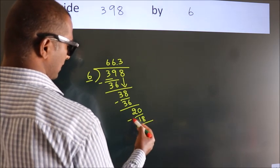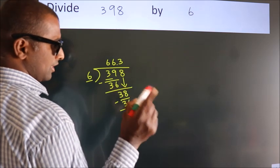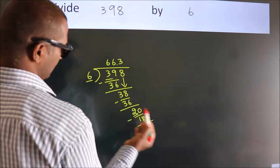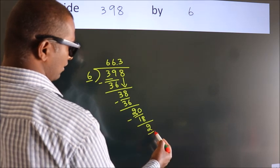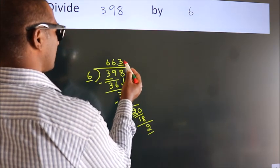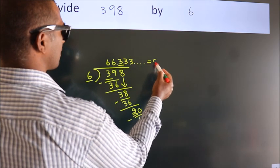Now we subtract and get 2. Now you observe: we had 2 here, and we got 2 again. That means this number keeps on repeating. So this is our quotient.